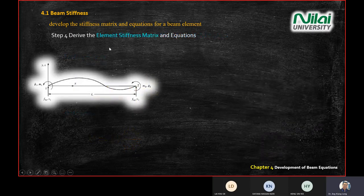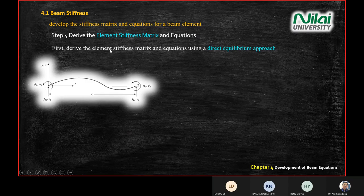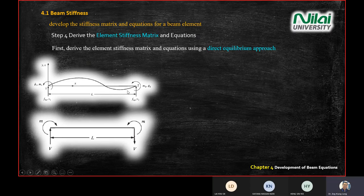Step 4 is to derive the stiffness matrix k. We use the direct equilibrium approach, meaning all forces equal zero or all moments equal zero. We then pull out two diagrams: one is the normal beam with two supports at each end, and the other shows the effect of loading.